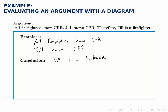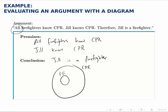But we can illustrate this with a diagram. Remember the word 'all' — that universal quantifier — has a diagram that looks like this, where we have everyone who knows CPR in the outer circle, and within that we have firefighters. So everyone who's inside the firefighter circle is also inside the circle of those who know CPR. But just knowing that Jill knows CPR, just knowing that she's in the outer circle, there's no way to tell whether she's in the inner circle or not.